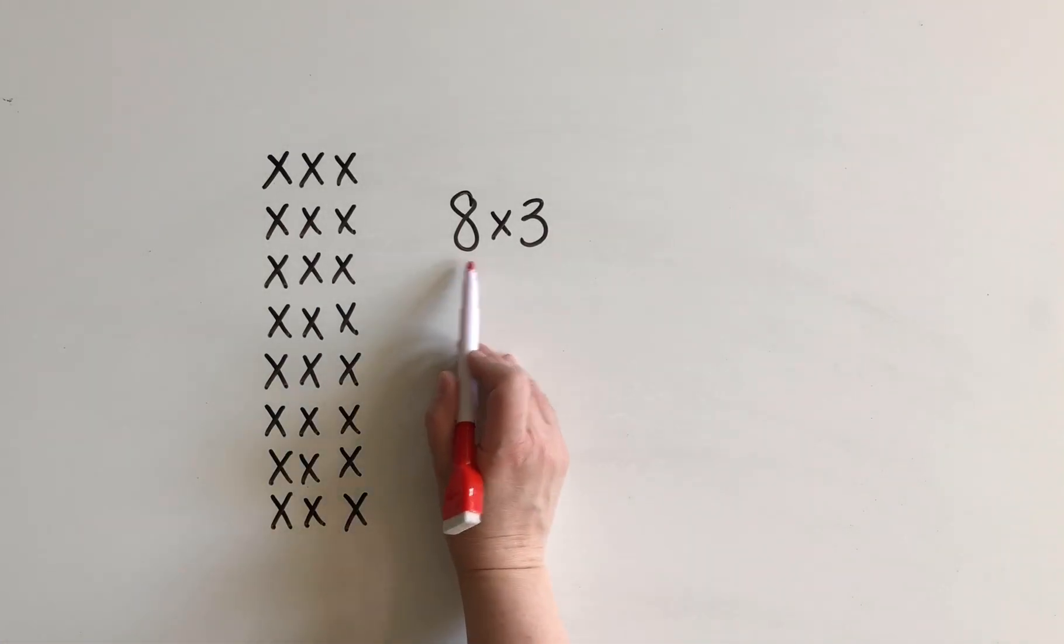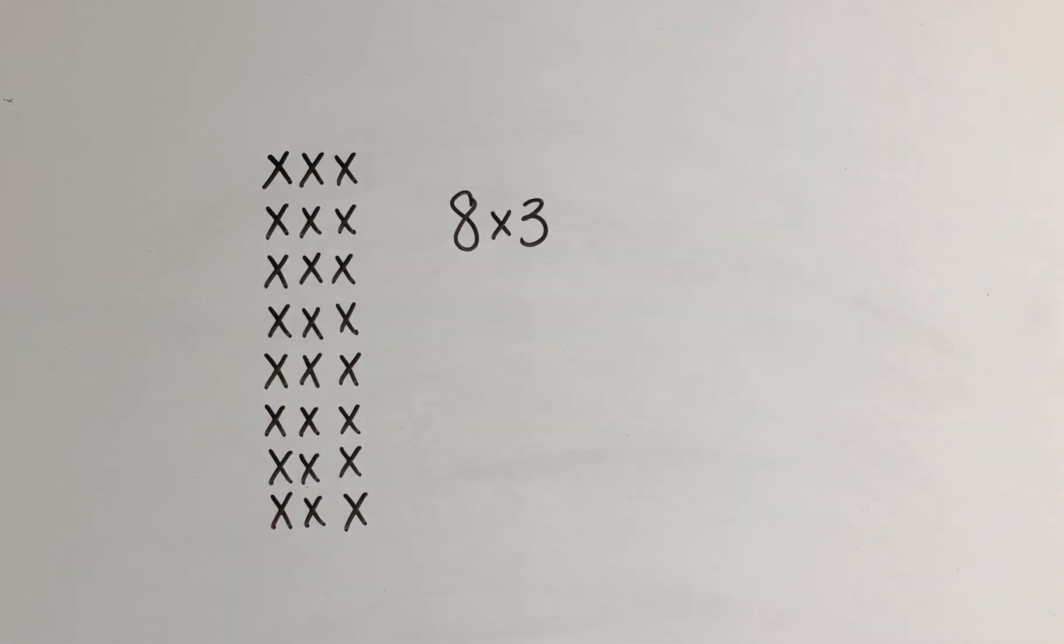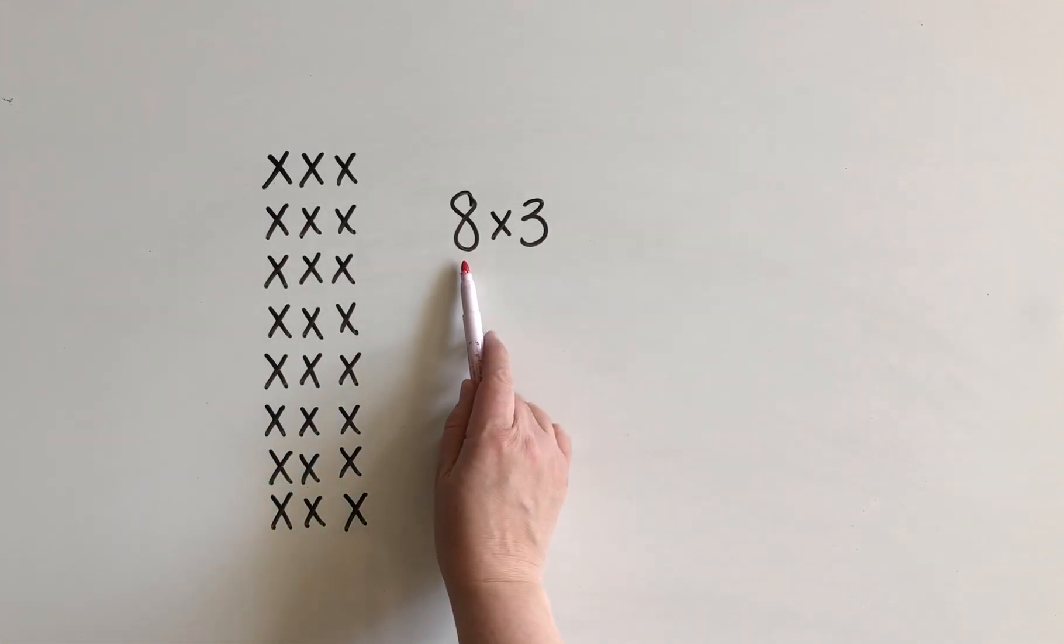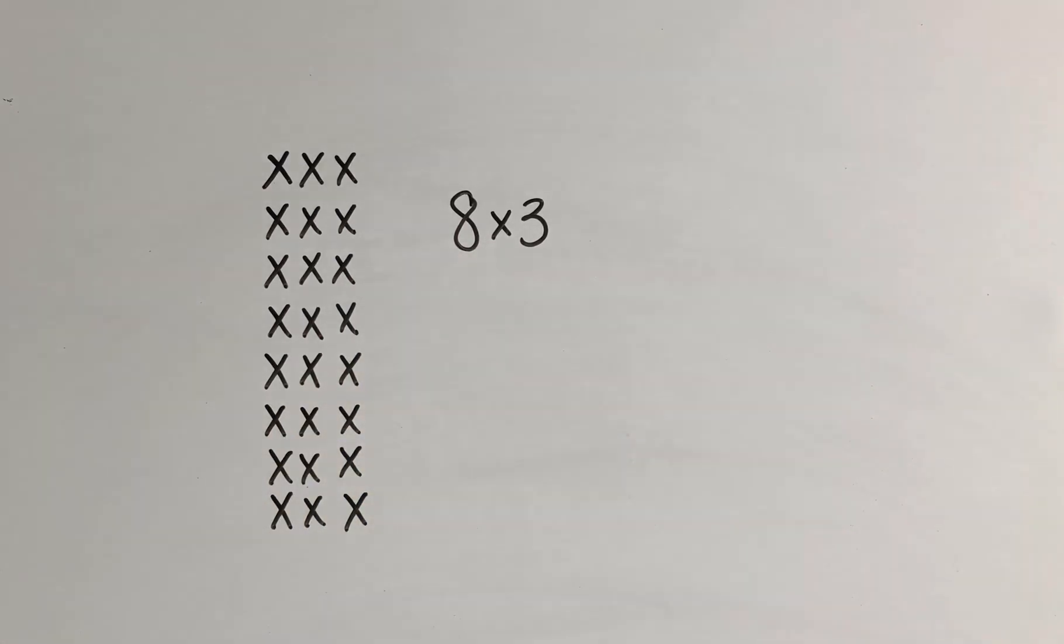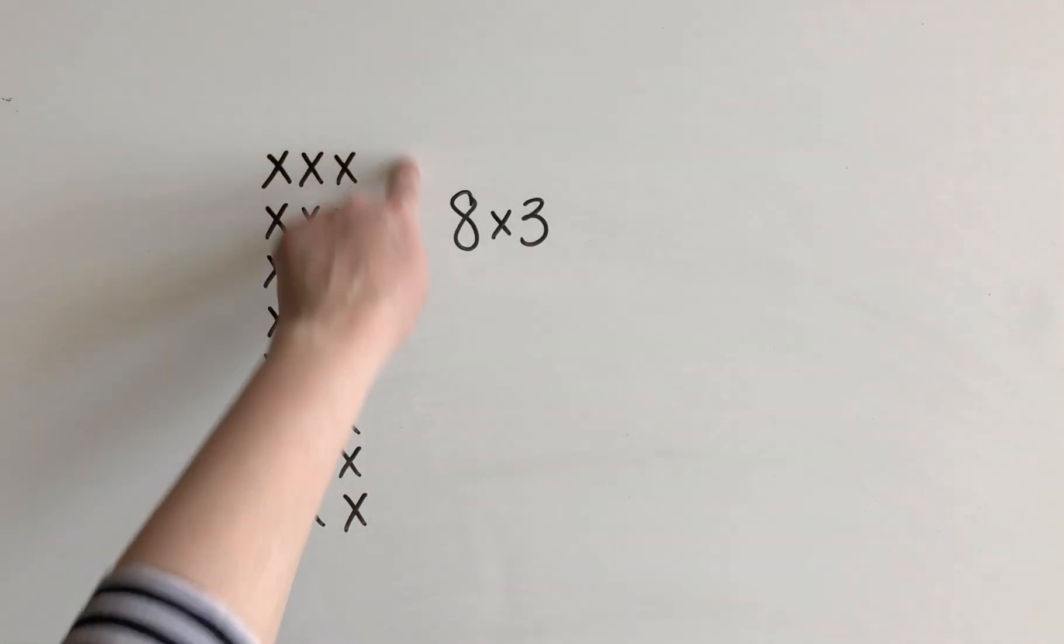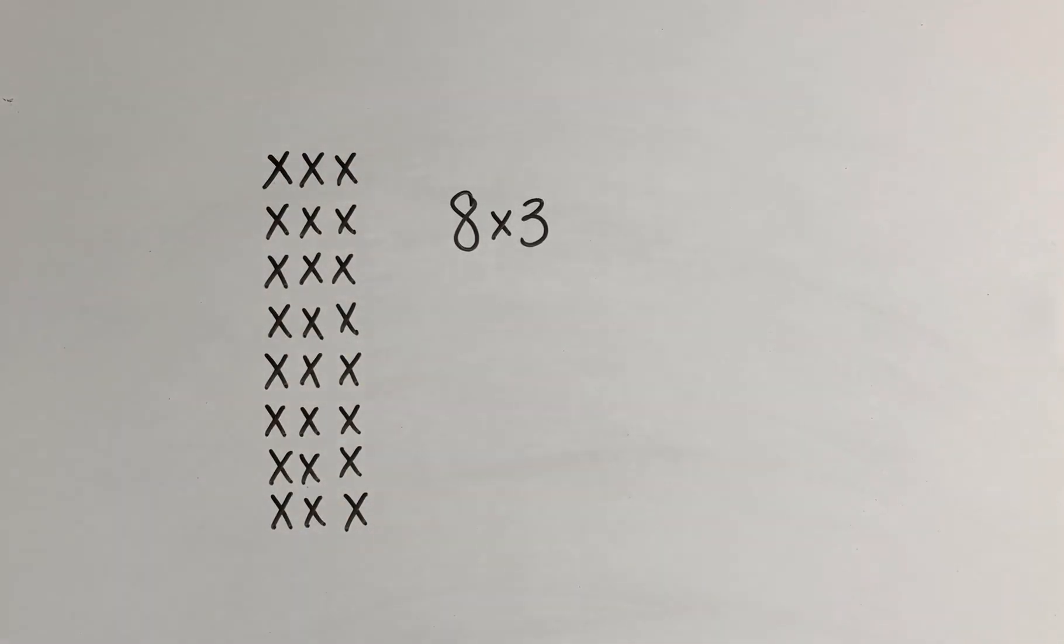So let's think about what 8 times 3 means. 8 times 3 is like saying 8 groups of 3. So if we were to draw that out in an array, it might look something like this. So here we have 8 groups or 8 rows and each group has 3 in it. I want you to imagine that this is 8 rows of chairs that we've set up and each row has 3 chairs and we want to know how many chairs there are all together. So let's talk about how we could figure this out.